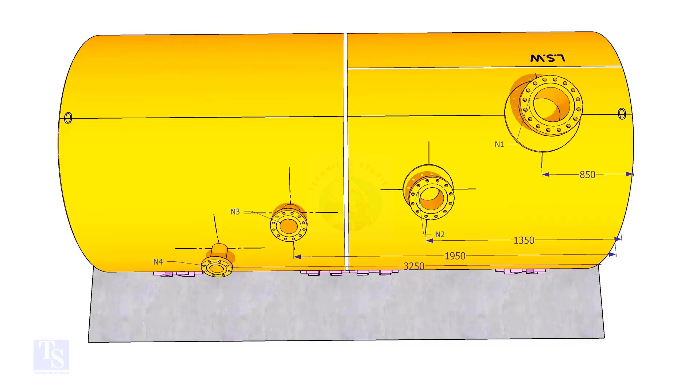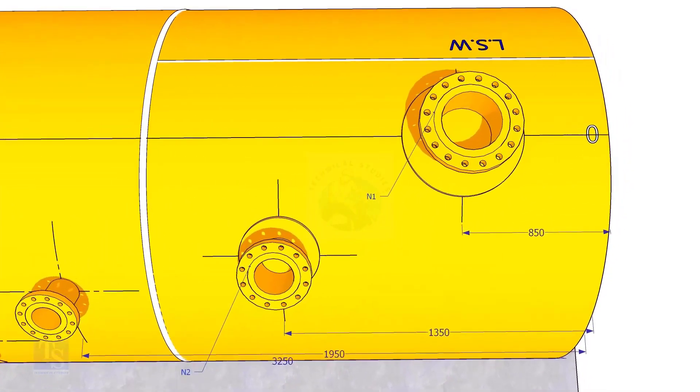Extend the nozzle N1 center line up to the other end of the shell and mark it as zero degree.